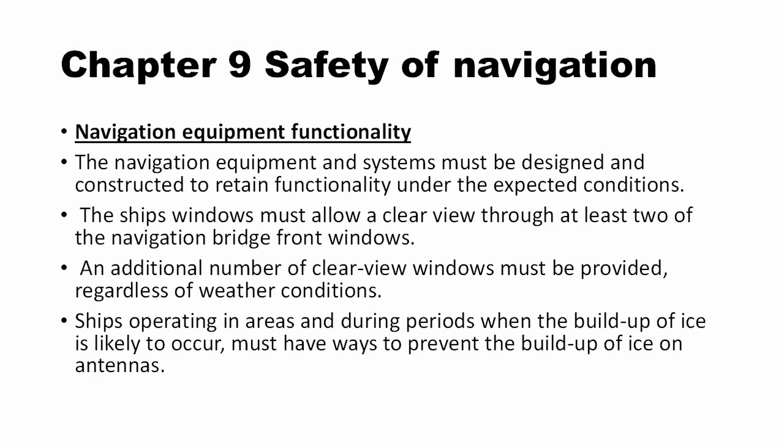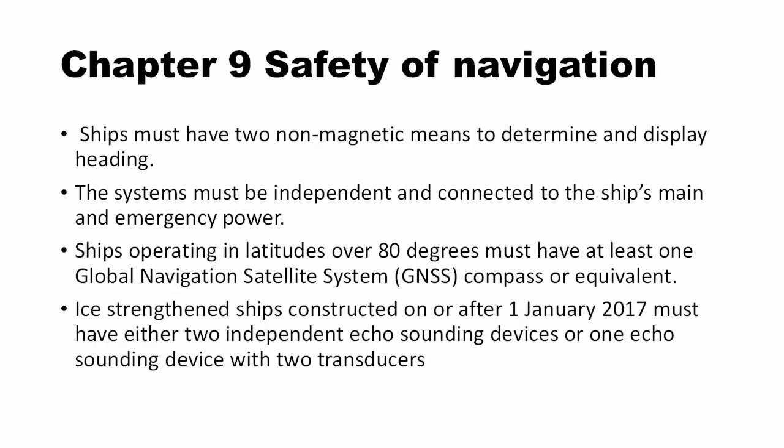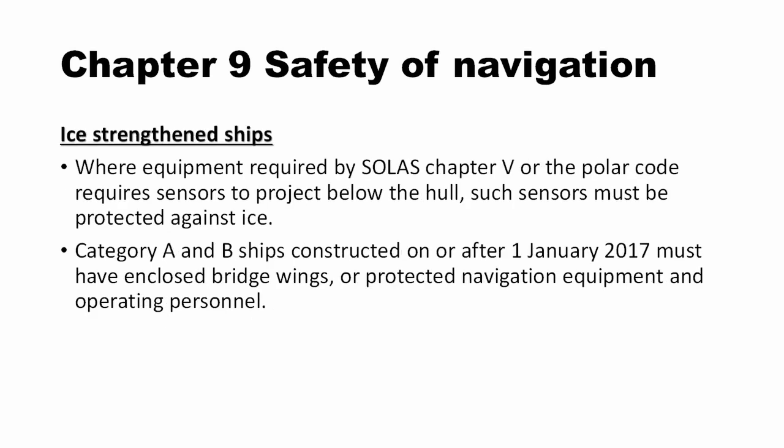The bridge must be fitted with a clear view screen at the stern also. Ships must be provided with means to prevent accumulation of ice on antennas required for navigation and communication. Sensors fitted below the hull must be protected against ice for high-strength vessels. Bridge wings should be enclosed or designed to protect navigation equipment and operating personnel. Ships should have non-magnetic means to determine and display their heading, both means being independent and connected to the ship's main and emergency source of power. Ships proceeding to latitudes over 80 degrees should be fitted with at least one GNSS compass or equivalent equipment.